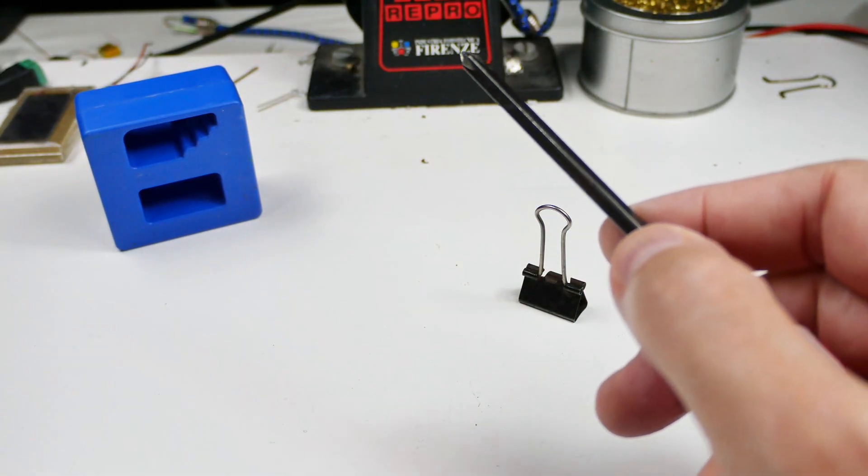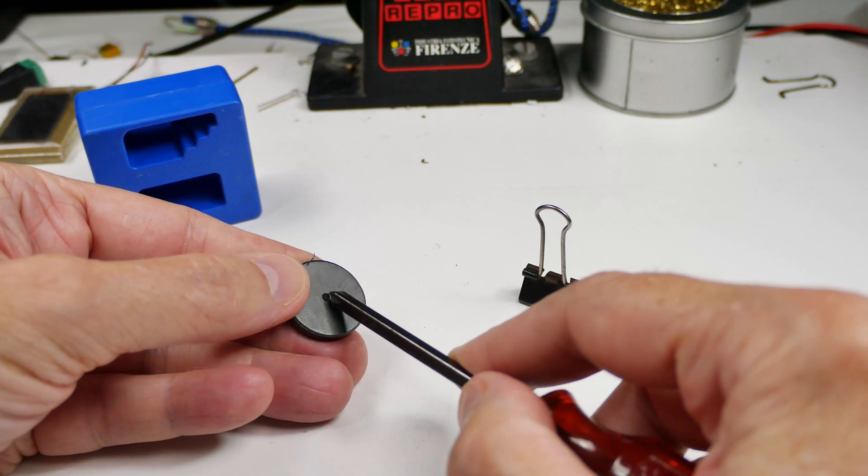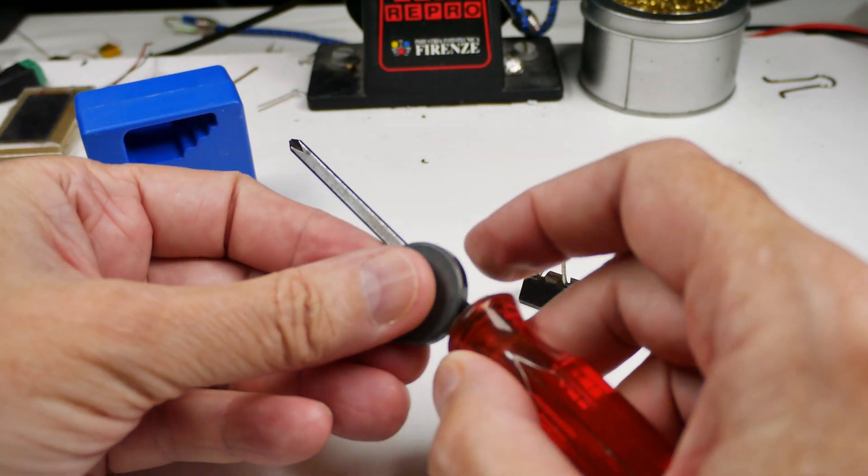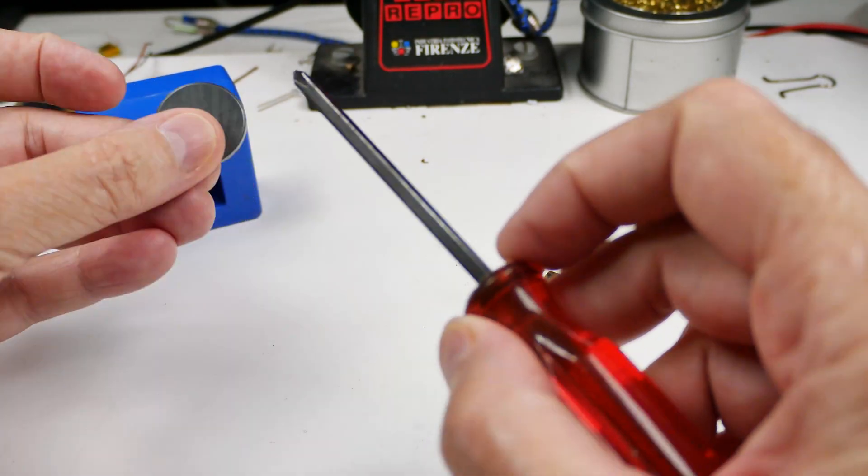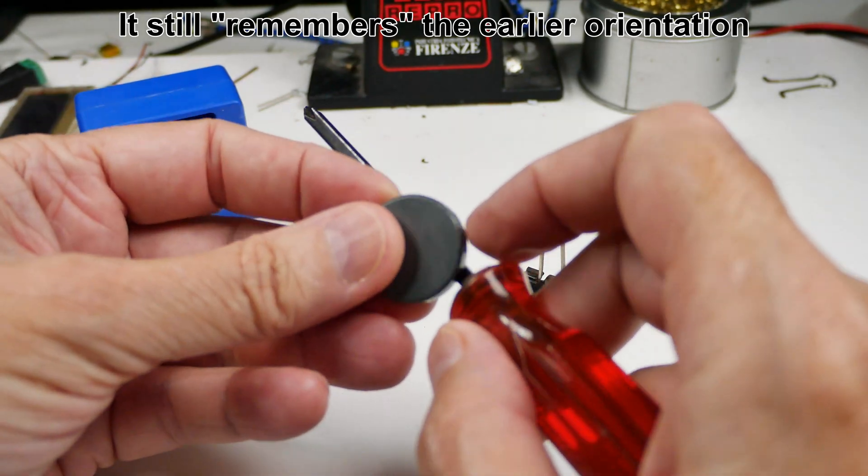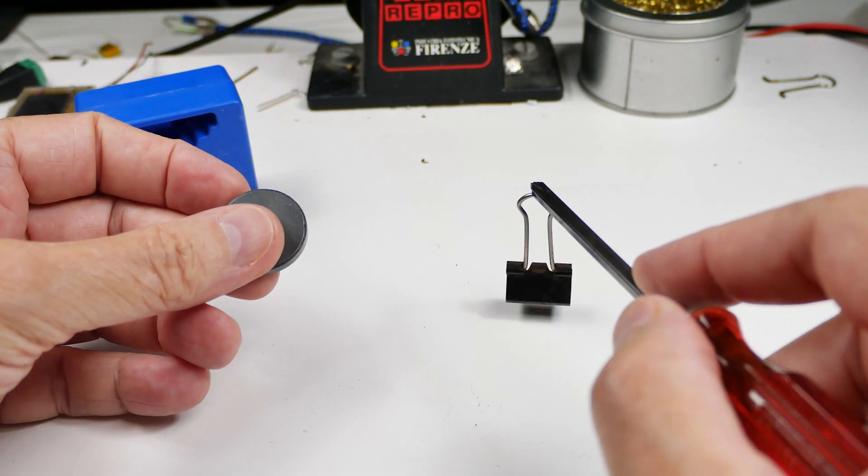But you can do the same thing if you just have an ordinary magnet like this. This one has a dot on one side, no dot on the other side, and you can magnetize it. Let's see if I can coerce it into being magnetic... nope. Let's try this side. There we go.